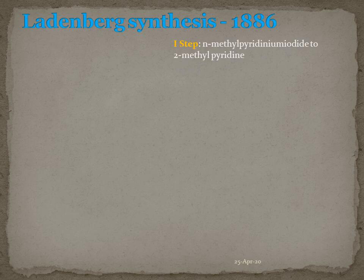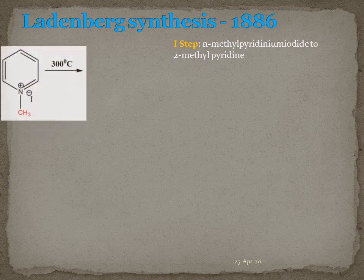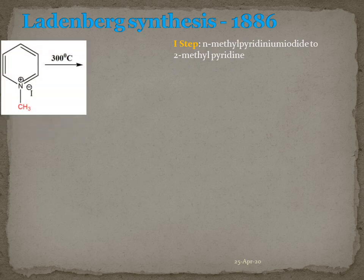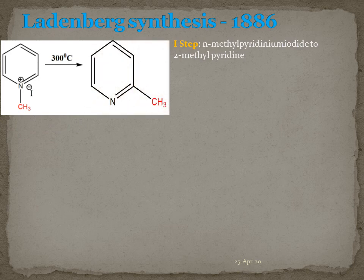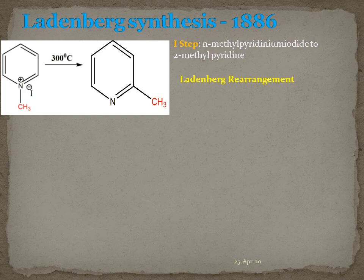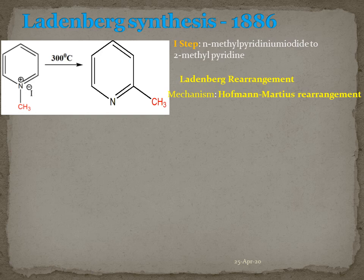The first step involves the conversion of N-methylpyridinium iodide into 2-methylpyridine. On heating to 300 degrees Celsius, N-methylpyridinium iodide is converted into 2-methylpyridine. The methyl group at the first position, linked with the nitrogen, migrates towards the second position. In the old literature this was termed the Ladenburg rearrangement, though the mechanism is very complex. In recent textbooks it is shown that the mechanism is much similar to the Hofmann-Martius rearrangement of N-alkylated anilines.